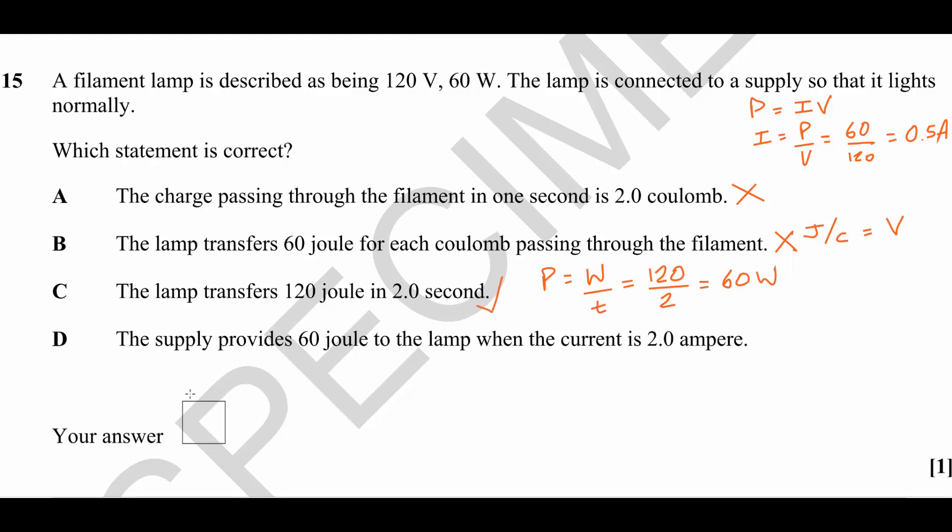For completeness, let's just have a look at D: The supply provides 60 joules to the lamp when the current is 2 amperes. Well, as a statement that doesn't really make sense. It doesn't tell us over what period of time the energy is supplied, and in any case we know that the current is half an amp when the power is 60 watts. So D doesn't really make any sense.